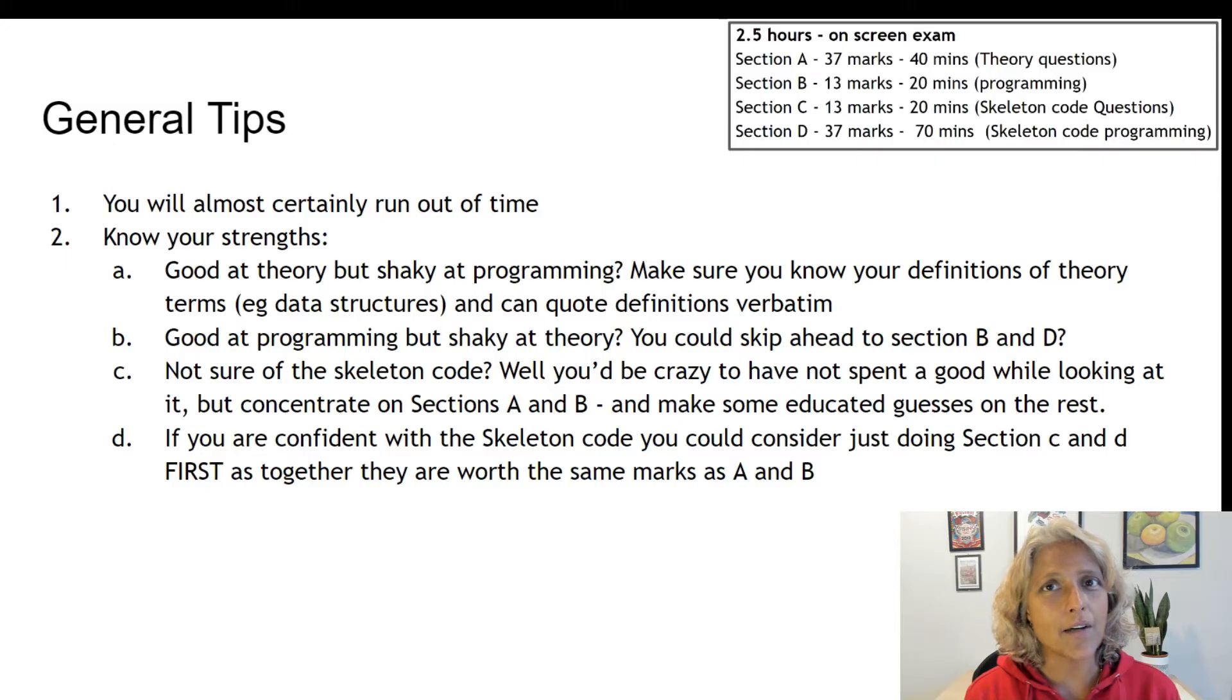If you're confident with the skeleton code, you could consider just doing sections C and D first, as together they're worth the same amount of marks as A and B.